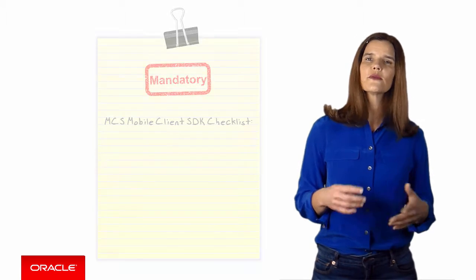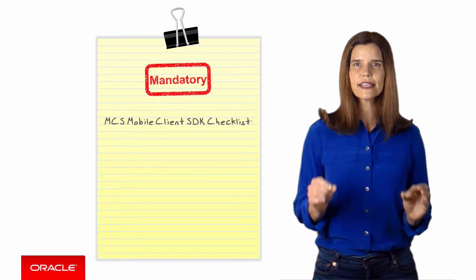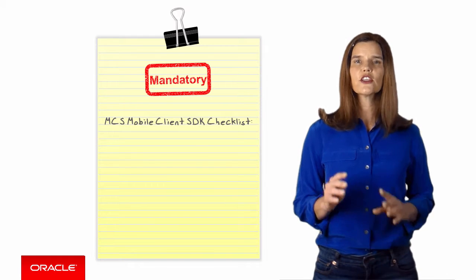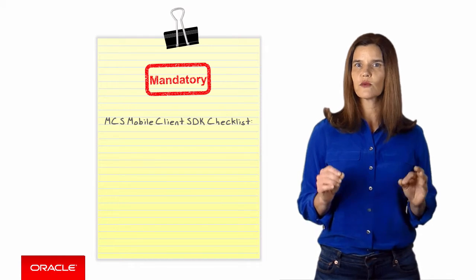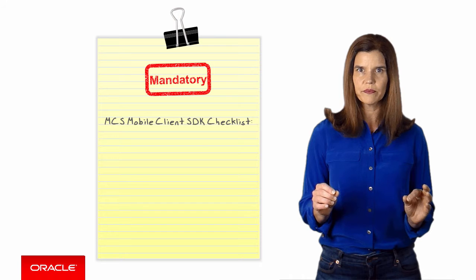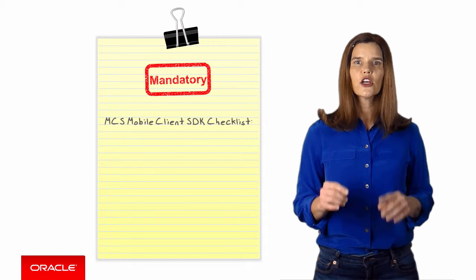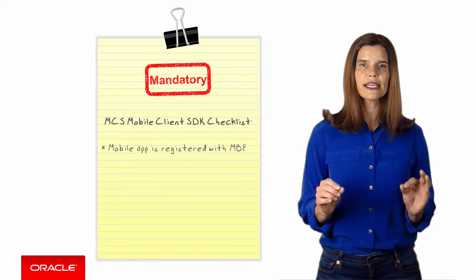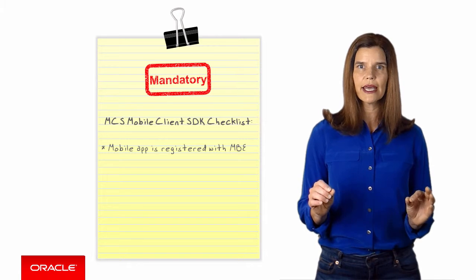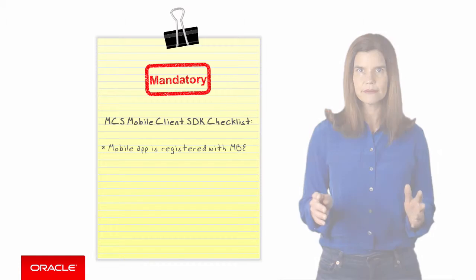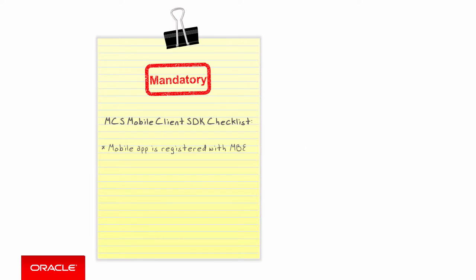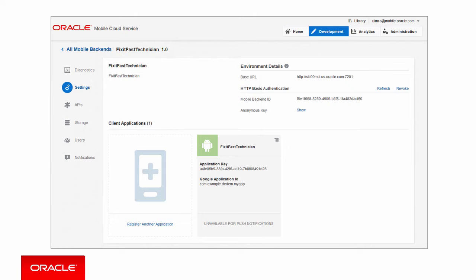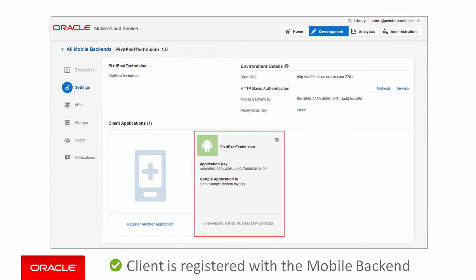Let's go through a checklist of the key steps so that you can make sure your application is ready to go. First, you need to make sure that your application is registered against the mobile backend in MCS. Look in the settings for the mobile backend, and make sure the application is listed along with the application key.